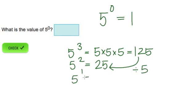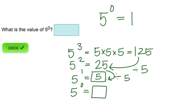To get 5 to the 1st power, we divide again. 25 divided by 5 is equal to 5. So 5 to the 0 power, we're going to divide 5 by 5. 5 divided by 5 equals 1. So the correct answer here is 1.